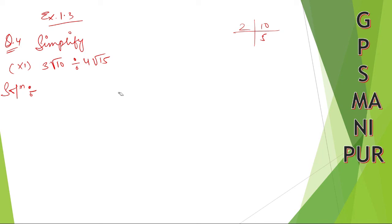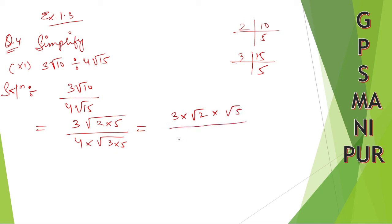Let's write down like this first. 3 root 10 divided by 4 root 15. We can write it like this, so it will be easy. So 3 root 10, it is 2 into 5, divided by 4 into 15. 3 times 5 is 15. So 3 into root 2 into root 5 divided by 4 into root 3 into root 5.